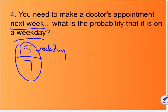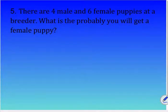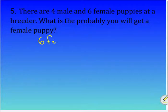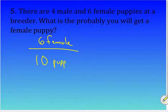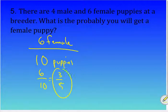There are four male and six female puppies at a breeder. What's the probability you will get a female puppy? It's pretty straightforward — there are six female puppies out of ten total puppies, so six out of ten simplifies to three out of five. That's your probability.